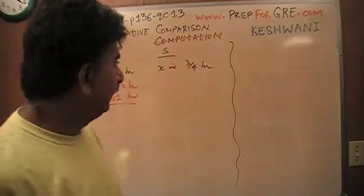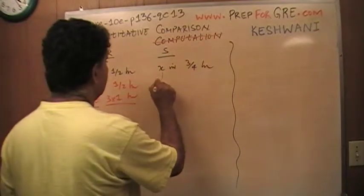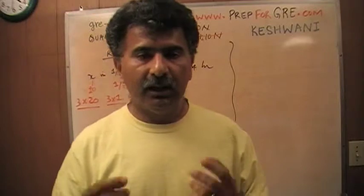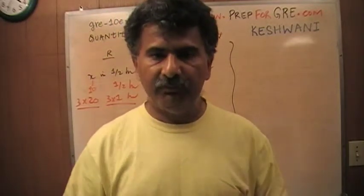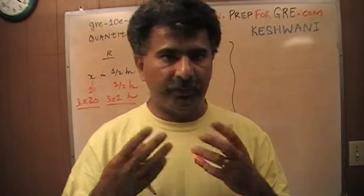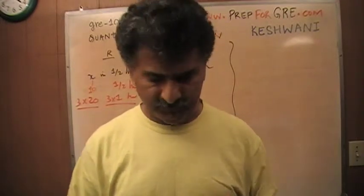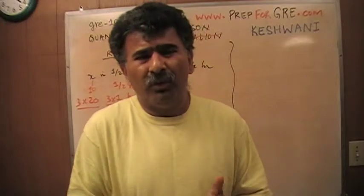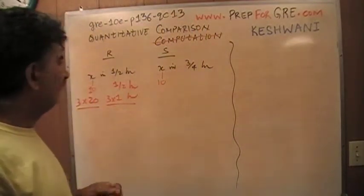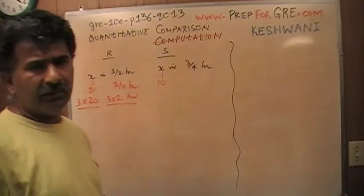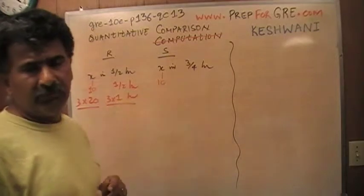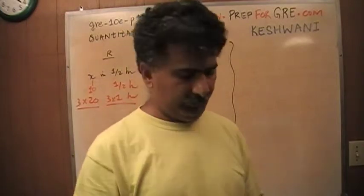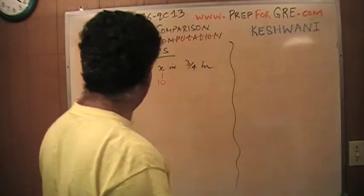Now I realize a problem with the plug-in method: you don't know how the numbers you plug in are going to work out. Sometimes they're fine — hunky-dory — and sometimes they're awkward. For example, S does X in three-quarters of an hour, so if X is 10, that's very awkward. I need a nice multiple of three so I can figure out how much it does in a quarter of an hour. I need to go back and change my numbers.